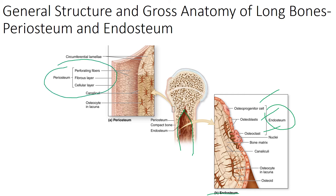The periosteum is the outer portion — think of it as the perimeter of the bone. Here we find dense irregular connective tissue, giving it strength and the ability to pull in multiple directions. It covers the external surface of bone except where there is articular cartilage. The periosteum helps anchor the bone matrix and also anchors blood vessels and nerves within the bone, which is why we find all the different tissue types present.